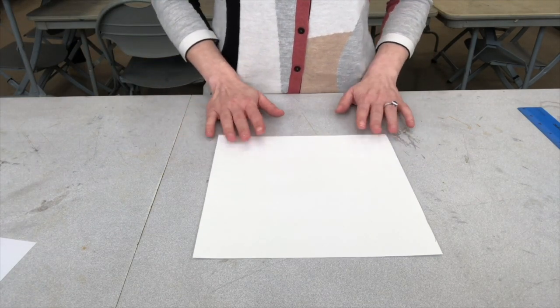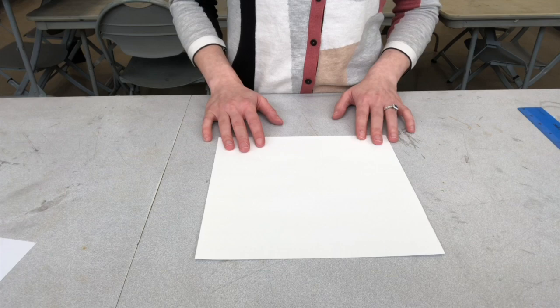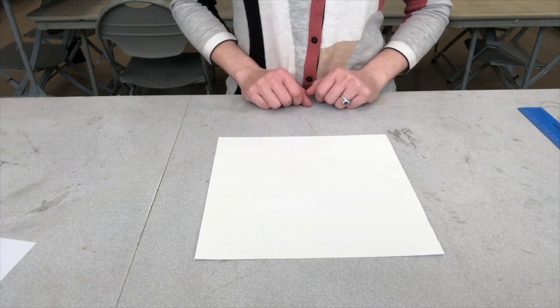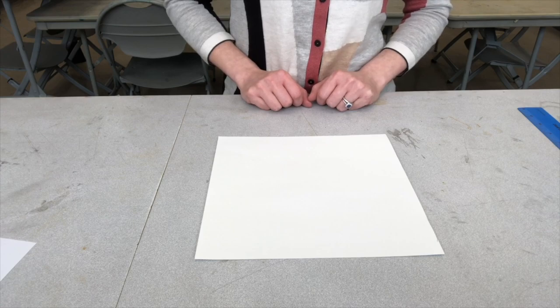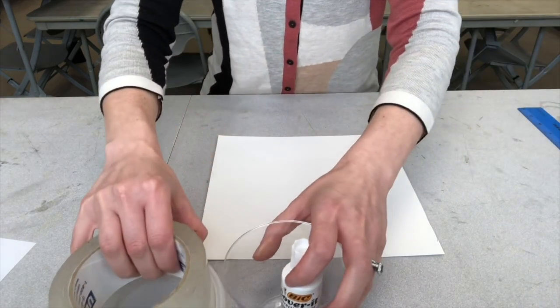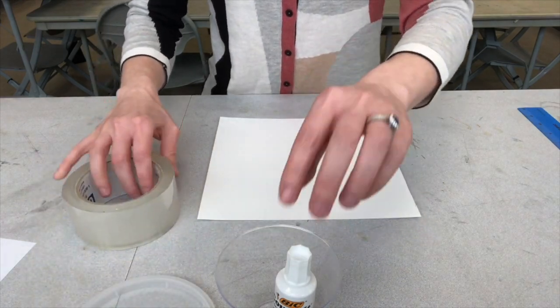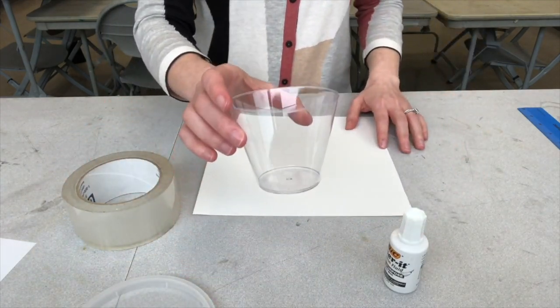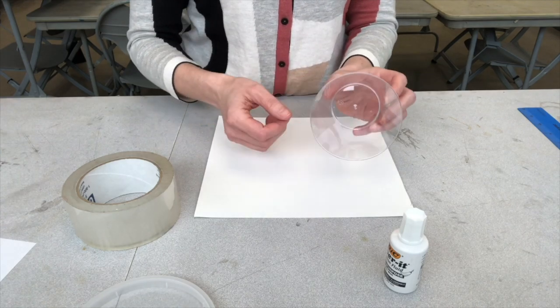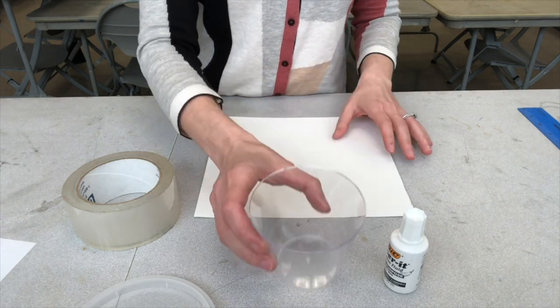And now working with our square, we are going to draw a series of overlapping circles all over the paper. So to make this easier, I've gathered a few items that you might have around your house that you can actually trace. So items like a cup. The cup has a small circle on the bottom and a large circle on the top. You can trace either one of those.